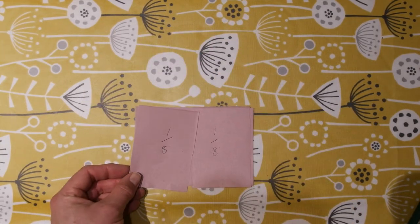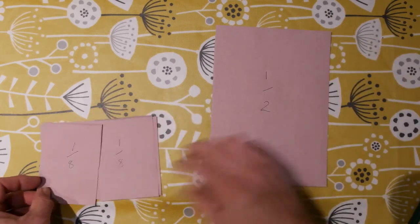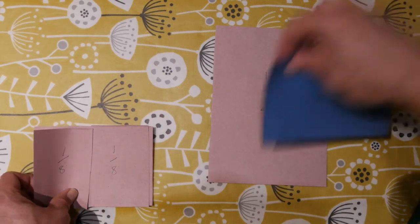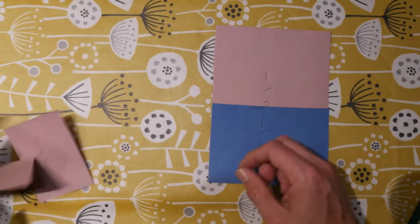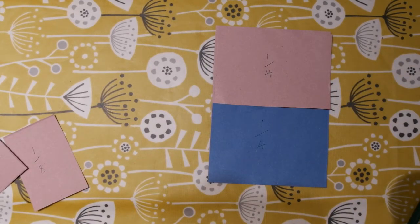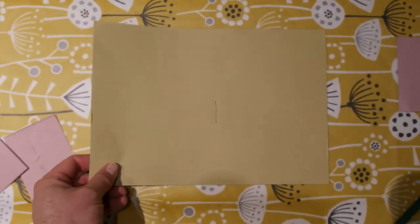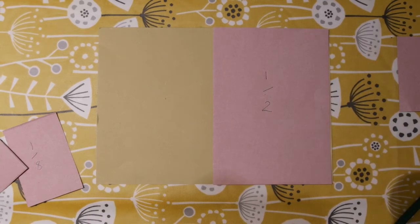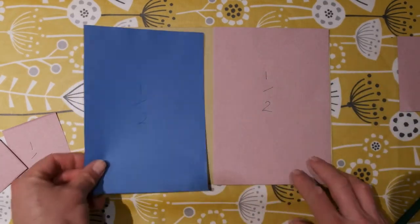We can see that two quarters combine together to make a half, and we can see that two halves combine together to make a whole.